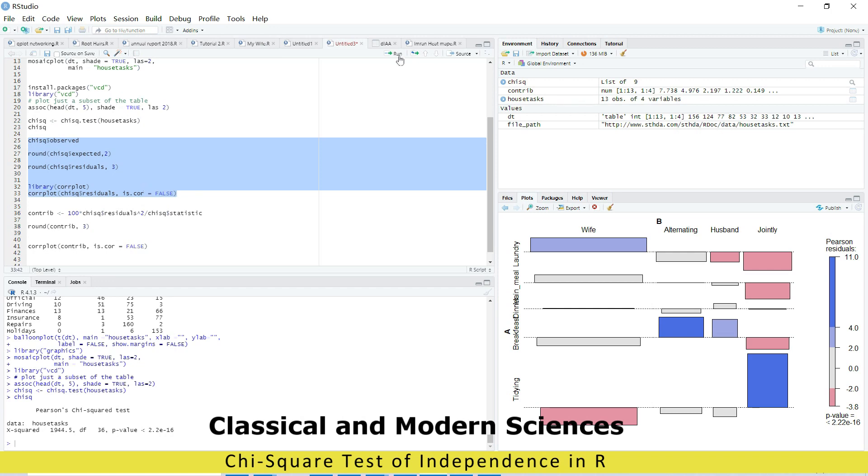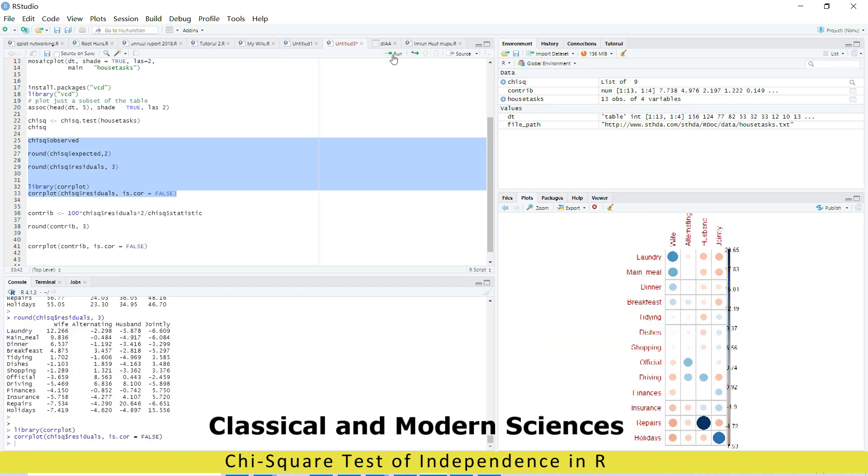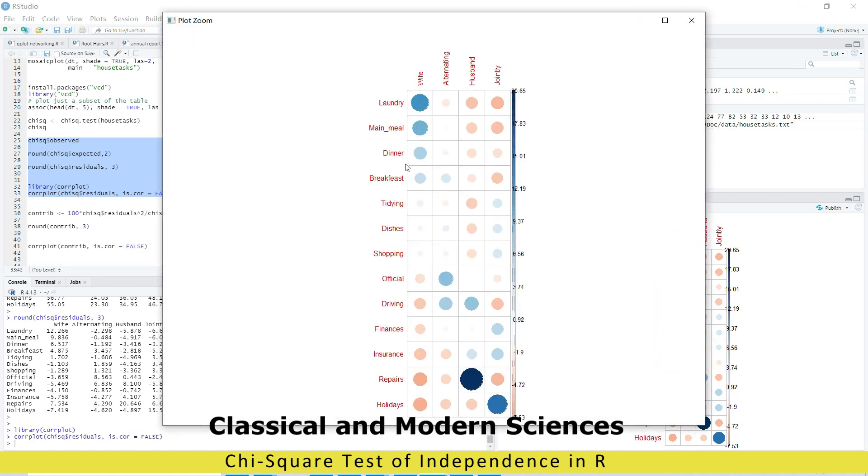So we can find correlation of chi-square residuals. So now you can see, blue is positive correlation, and red is negative.